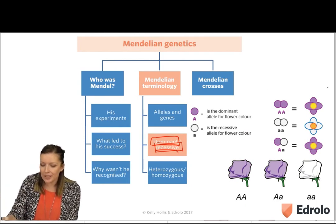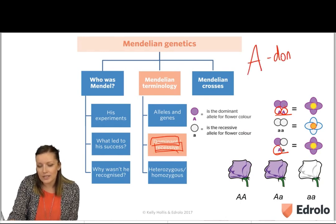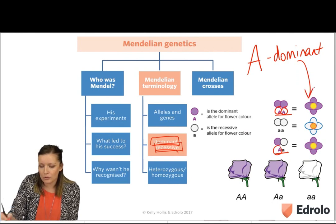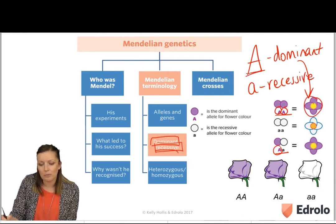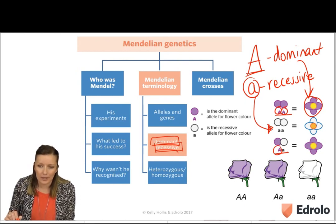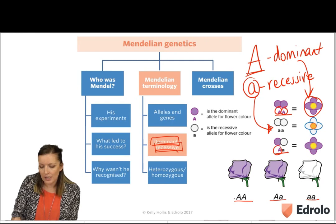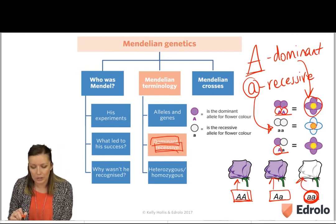Looking at our flowers, both of the purple flowers have the big A. The big A is dominant and refers to the purple flower color. The little a is recessive. If the individual has a big A, they will always show the purple flower color. However, if they have two little a's, they will show the white flower color. So big A big A — purple; big A little a — also purple. Because this last flower doesn't have the dominant allele, it shows the recessive trait, which is white.